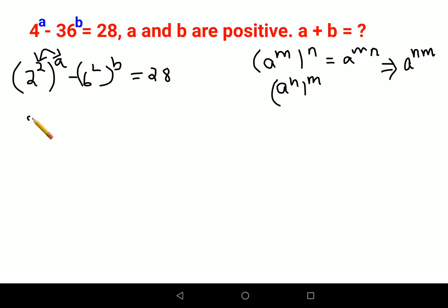So similarly I can write this as 2 raised to a the whole raised to 2 minus 6 raised to b the whole raised to 2 equals to 28.